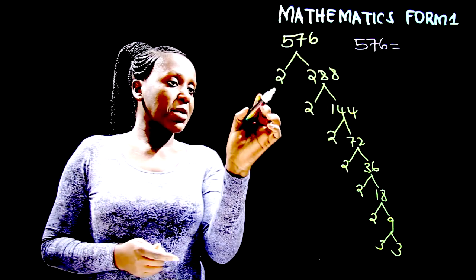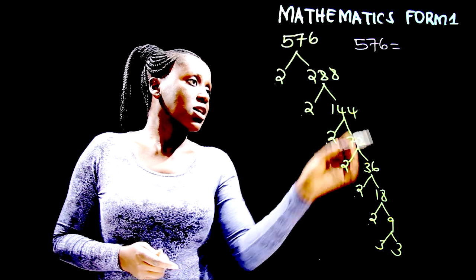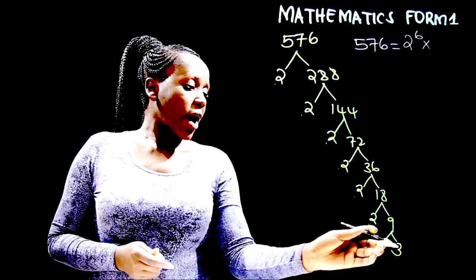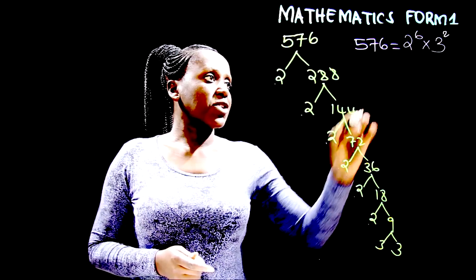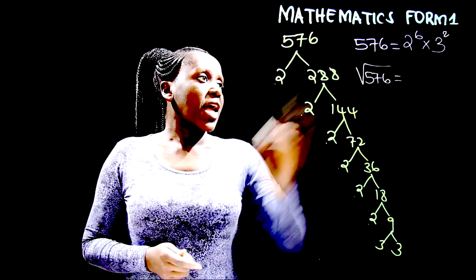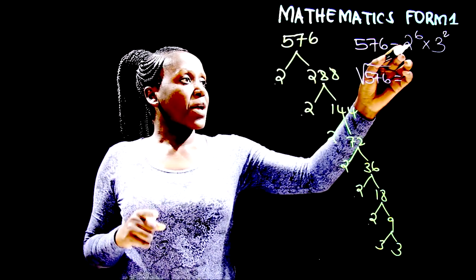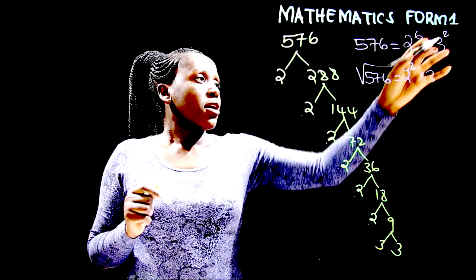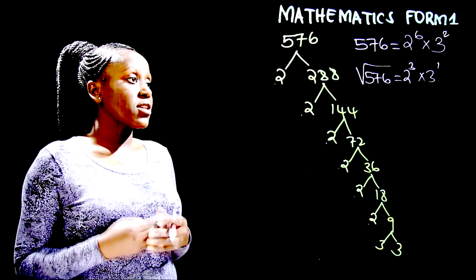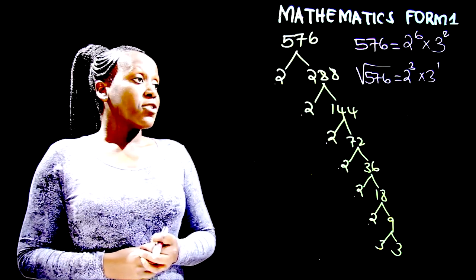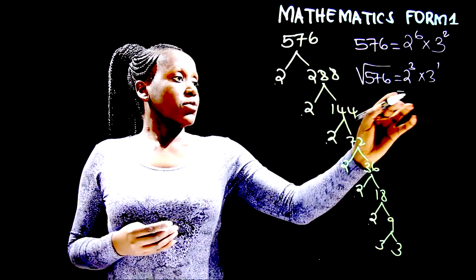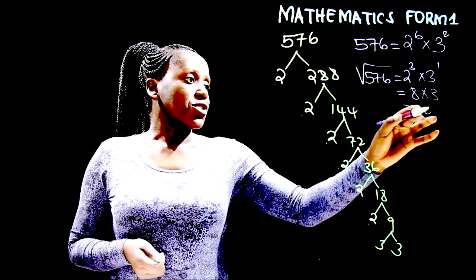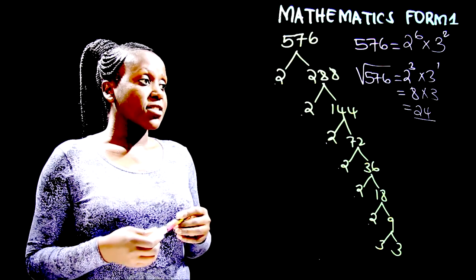So 576 equals 2 to the power 6 multiplied by 3 to the power 2. To obtain the square root of 576, we divide each power by 2: 6 divided by 2 is 3, and 2 divided by 2 is 1. So the square root of 576 equals 2 to the power 3 times 3 to the power 1, which is 8 times 3, equal to 24. The square root of 576 is 24.